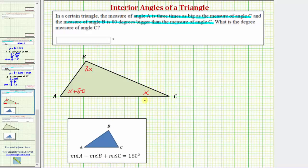we can write an equation, solve for x, then determine the measure of any of the three angles that we wish. Our equation would be x plus 3x plus x plus 80 equals 180.